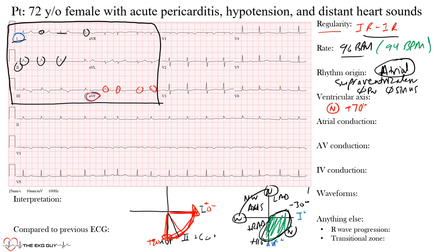Next we look at atrial conduction — are there any P waves, any right or left atrial abnormality? In this case we said there are no P waves, so there's no abnormal atrial conduction to assess. For AV nodal conduction, we'd normally look at the PR interval for dropped beats, but with no P waves present, we don't really have a PR interval to evaluate — conduction is starting from that region but there's no P wave to anchor it.